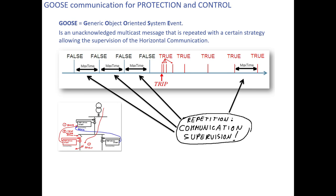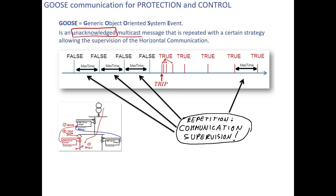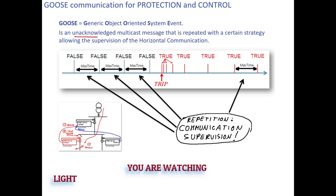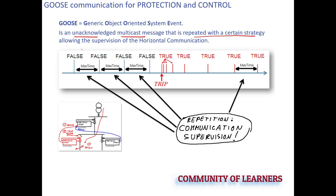The first topic is GOOSE communication for protection as well as for control. GOOSE means Generic Object Oriented System Event. GOOSE is an unacknowledged multicast message — that is a keyword I will explain — repeated with a certain strategy, allowing the supervision of horizontal communication.